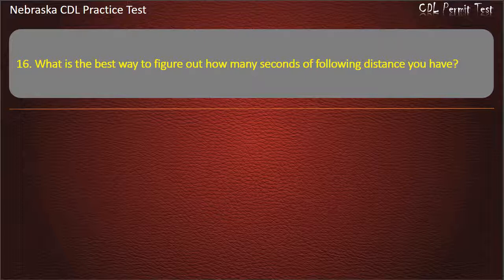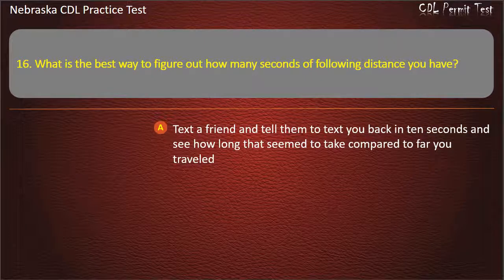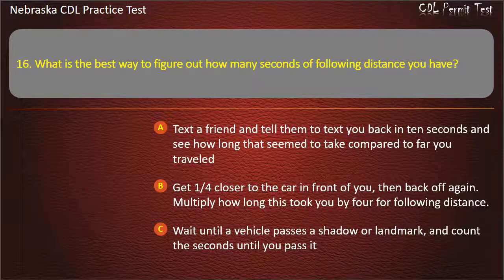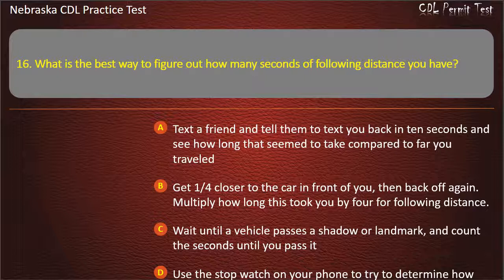Question 16. What is the best way to figure out how many seconds of following distance you have? Text a friend and tell them to text you back in 10 seconds; get one-fourth closer to the car in front of you then back off; wait until a vehicle passes a shadow or landmark and count the seconds until you pass it; use the stopwatch on your phone. Answer: Wait until a vehicle passes a shadow or landmark, and count the seconds until you pass it.